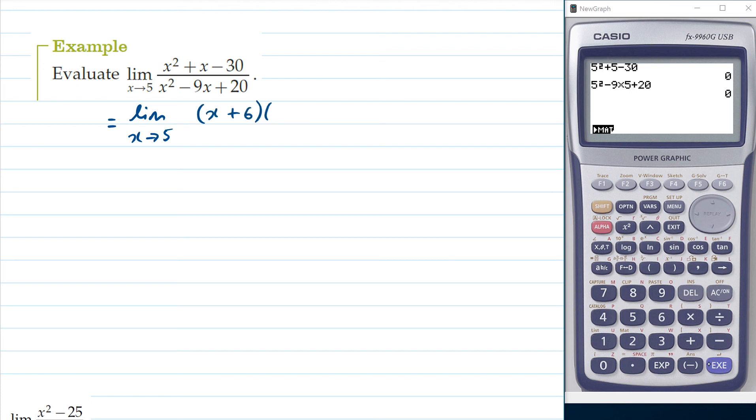So the top of the function factorizes to (x + 6)(x - 5) and the bottom of the function factorizes to (x - 4)(x - 5). And you can see here we've got some canceling that we can do.